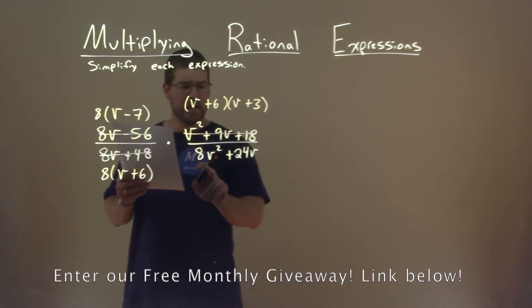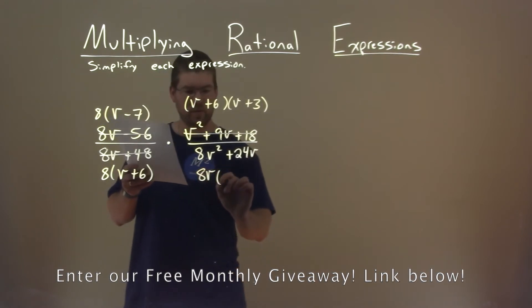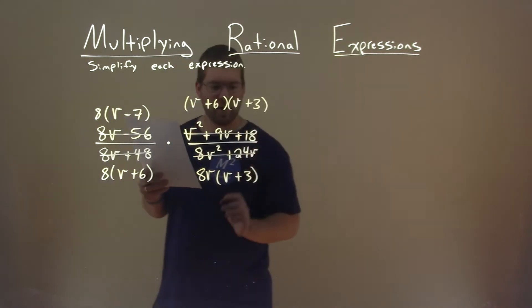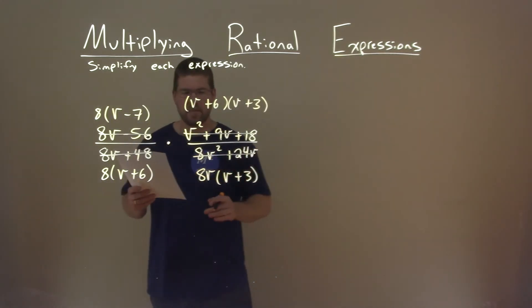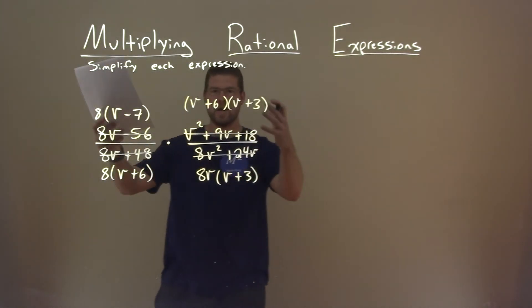Lastly, down here, an 8v is in both parts. So if I pull out an 8v, I'm left with v plus 3. So 8v squared plus 24v cancels out, or is replaced in factored form. So now I have everything kind of factored out.